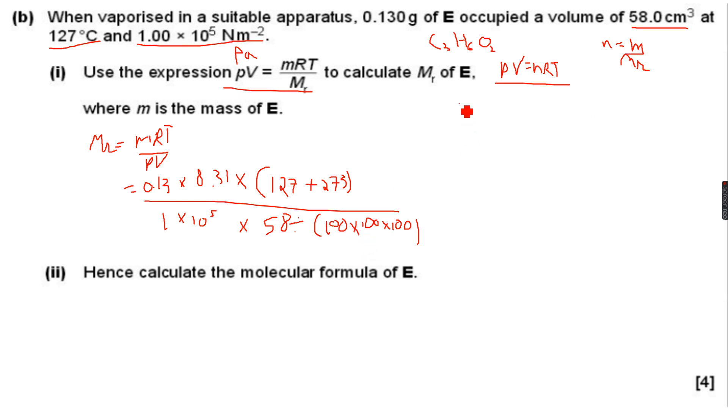Now when I put all these values on my calculator, let me see what I get. First let me calculate the denominator: 1 times 10 to the power of 5 times 58 divided by brackets open 100 times 100 times 100 brackets closed, so we get 5.8. Then I calculate the numerator: 0.13 times 8.31 times brackets open 127 plus 273 brackets closed. I will divide this value which is 432.12 by 5.8, so I get 74.5 grams per mole, which is around 75 grams per mole.